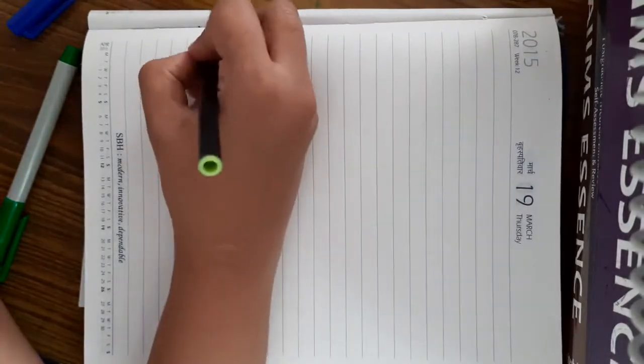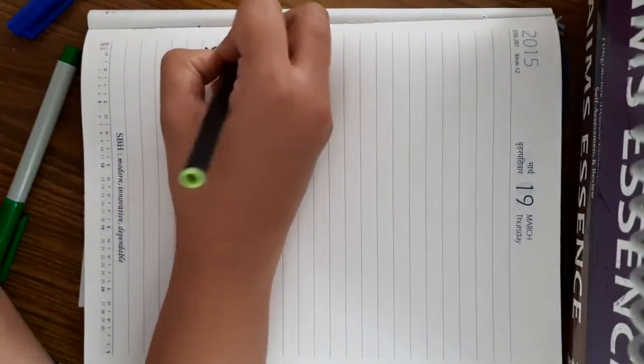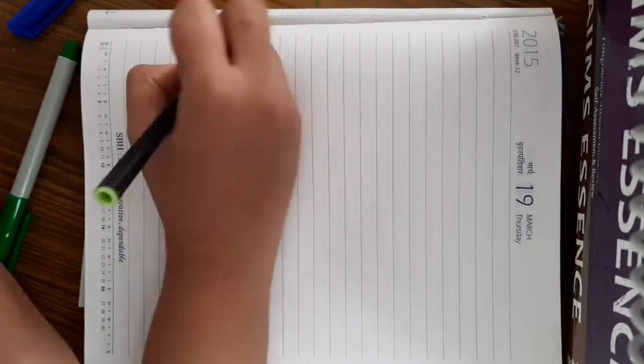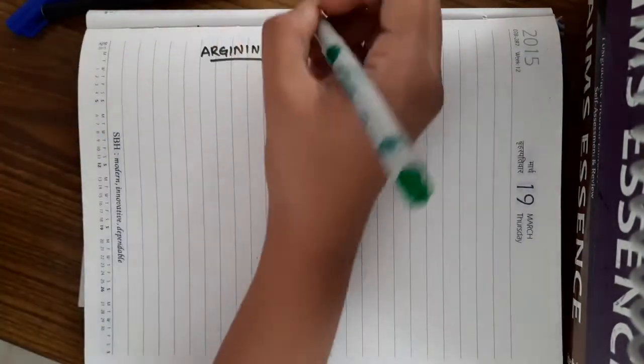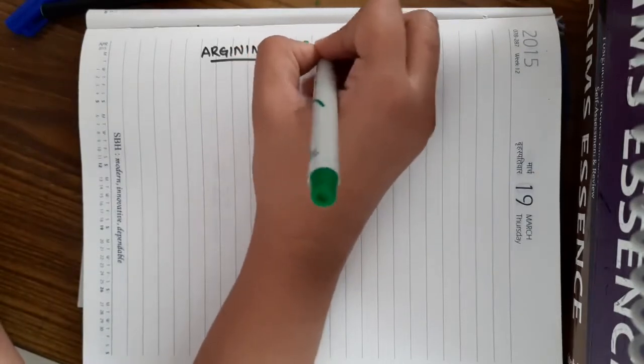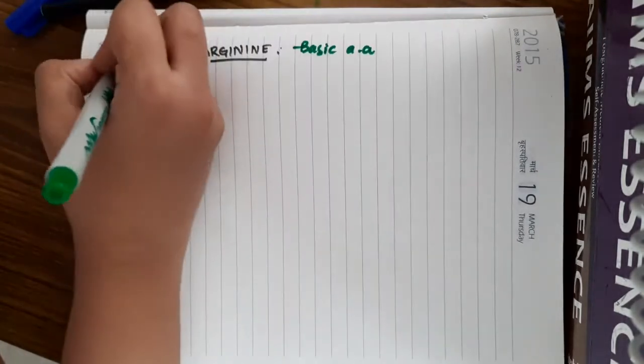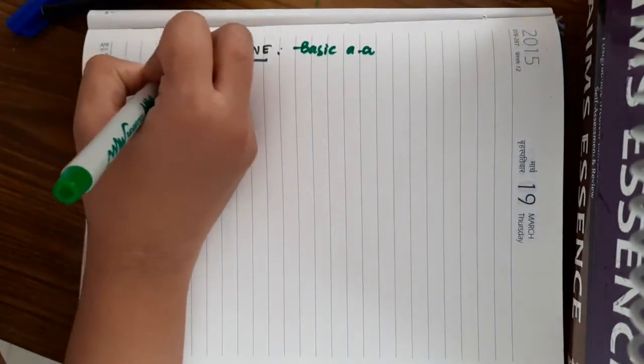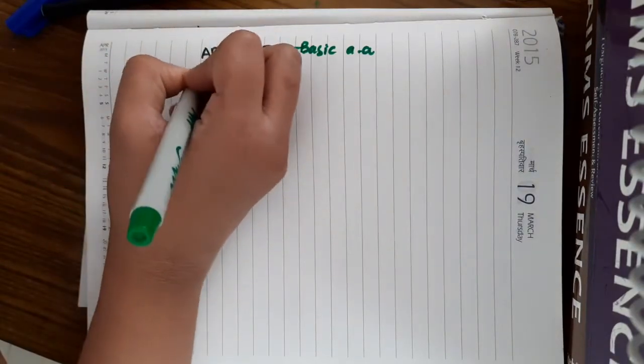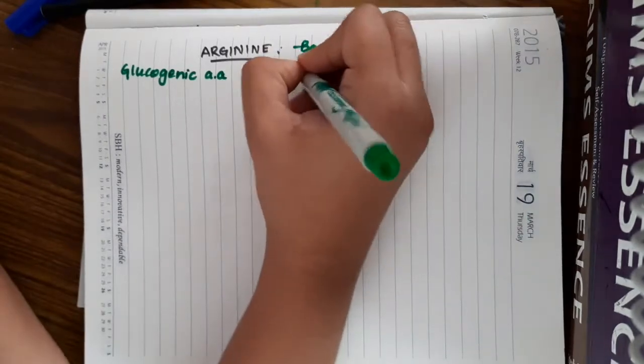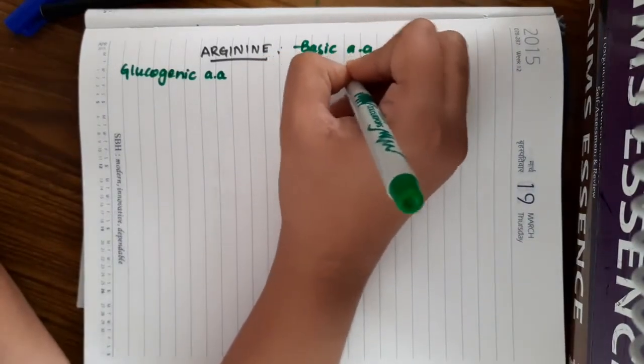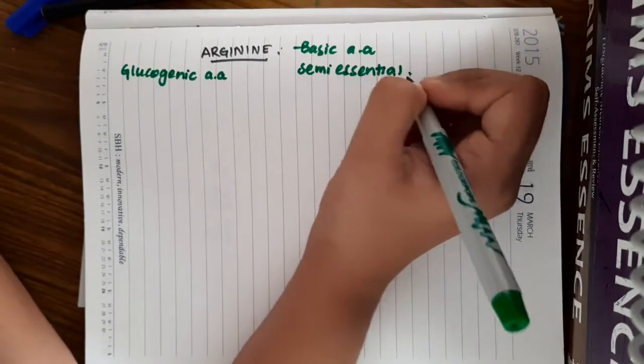Hello friends, let us learn some important points about the amino acid arginine. Arginine is a basic amino acid and it is a glucogenic amino acid. It is a basic amino acid and glucogenic amino acid and it is a semi-essential amino acid.